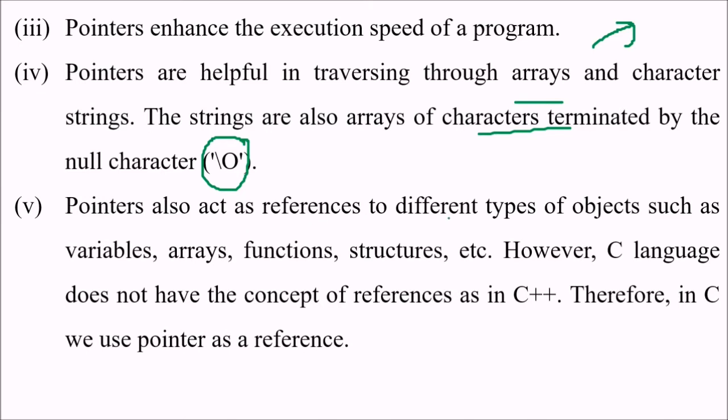Pointers also act as references to different types of objects such as variables, arrays, functions, structures, etc. However, C language does not have the concept of references as in C++. Therefore, in C we use the pointer as a reference.